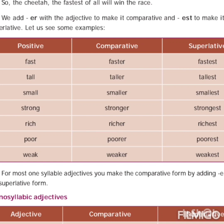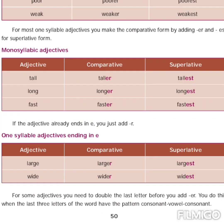When we make adjectives from positive to comparative and superlative, we add -er and -est. For example: fast → faster → fastest; tall → taller → tallest; small → smaller → smallest. For one-syllable (monosyllabic) words, we add -er and -est for comparative and superlative degree. If the adjective already ends in 'e', you only add -r and -st for comparative and superlative degree.